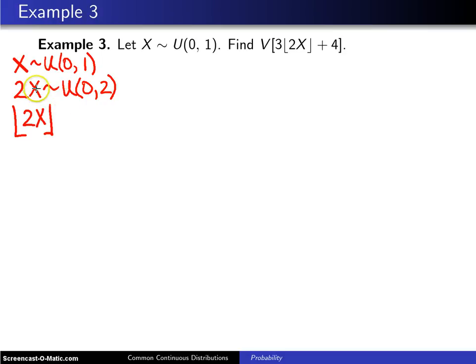So we've actually converted here, using the floor function, a continuous random variable into a discrete random variable.